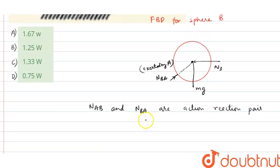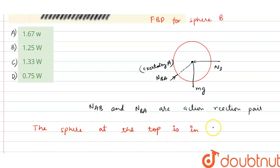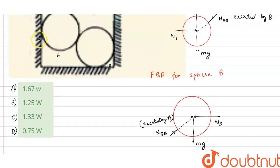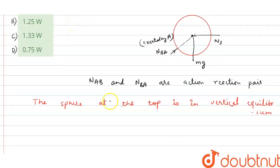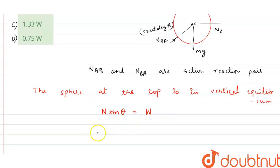Because the sphere at the top is in vertical equilibrium, we can write the equilibrium condition. The vertical component of the contact force gives us: N sine theta equals w, where w is the weight of the sphere.